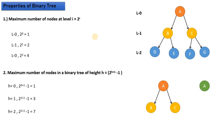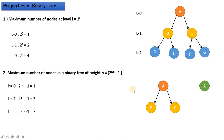The next property: the maximum number of nodes in a binary tree of height h is equal to 2 raised to power (h+1) minus 1.